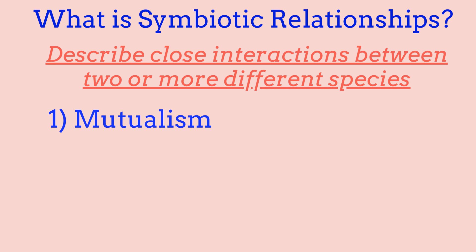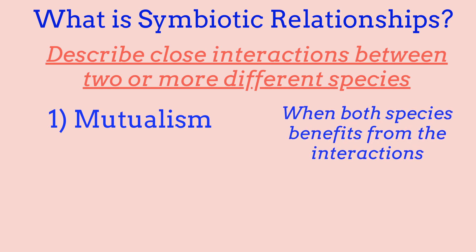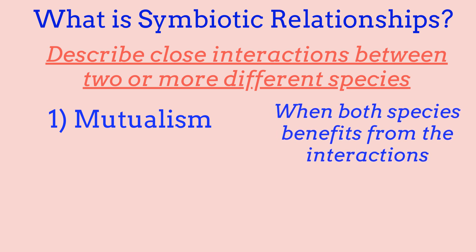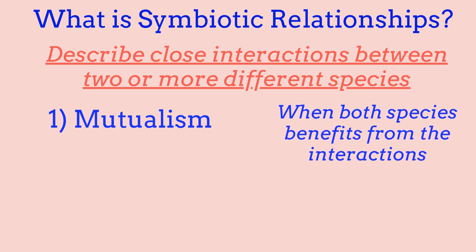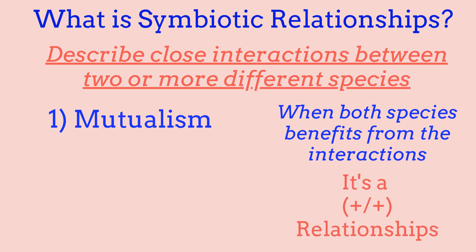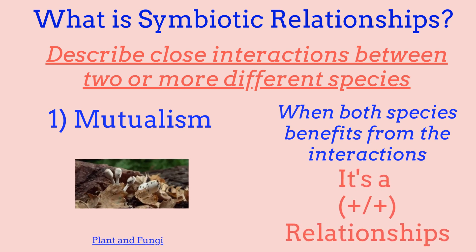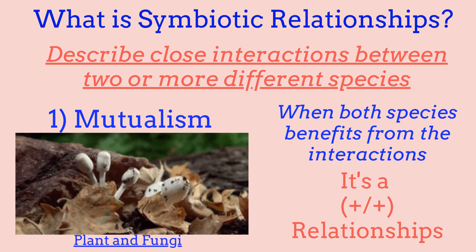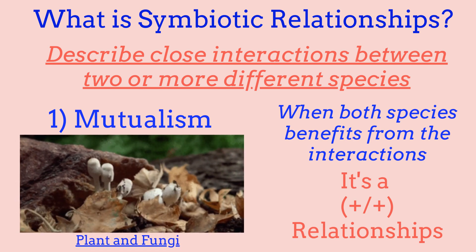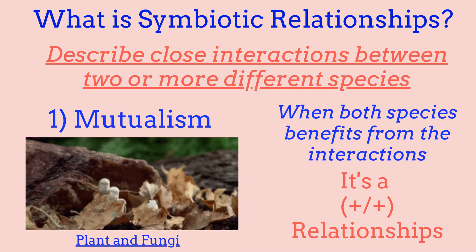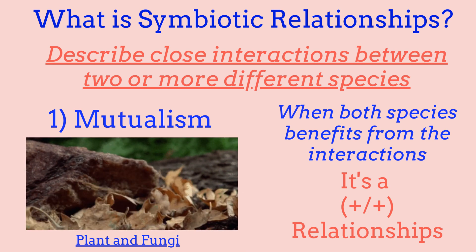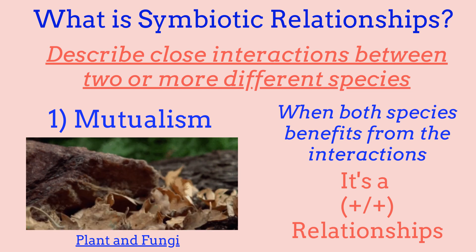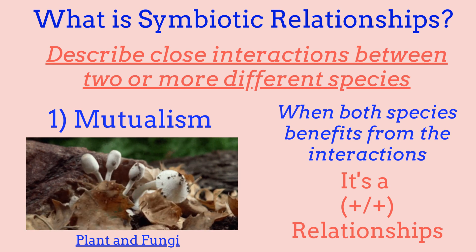Mutualism is when both species benefit from the interaction — it's a plus-plus relationship, like two friends helping each other on an exam. For example, many plants depend on fungi to help absorb water and minerals from the soil. The fungi attached to the roots increases the surface area of the roots, and the fungi benefits by drawing nutrients from the plant.